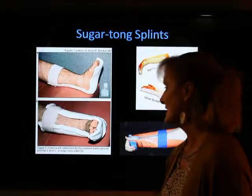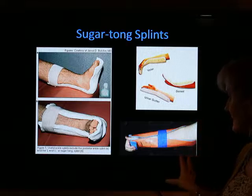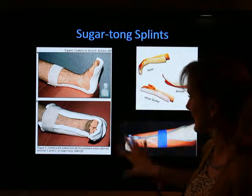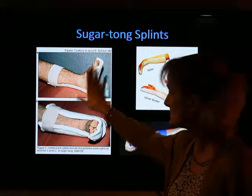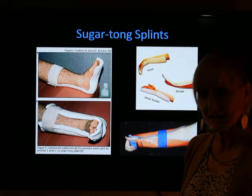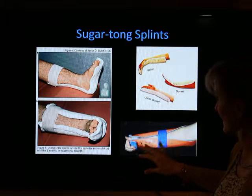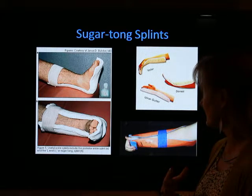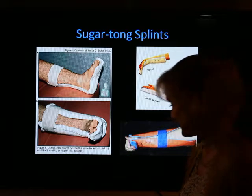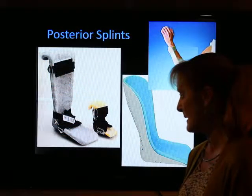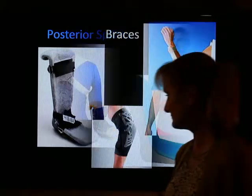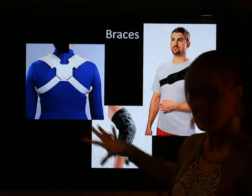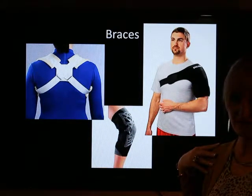Sometimes following a trauma, especially a break, you might have to put your patient in a splint. This is usually done temporarily until swelling is reduced enough to put a cast on if there is a broken bone, or until the lab can create a custom splint or brace. Posterior splints support the posterior part of the joint. Braces support meniscus, tendon, ligament, or muscle injuries — not broken bones.